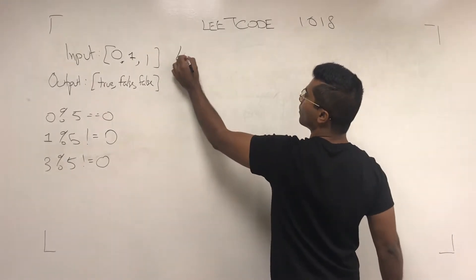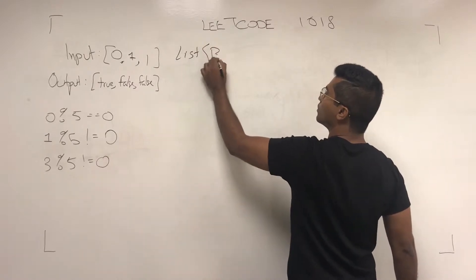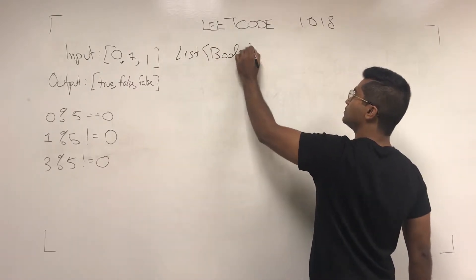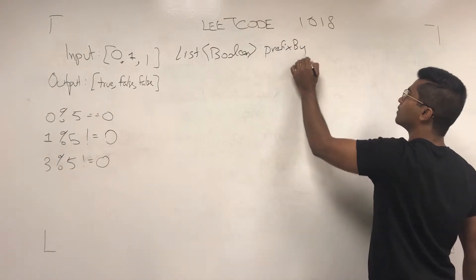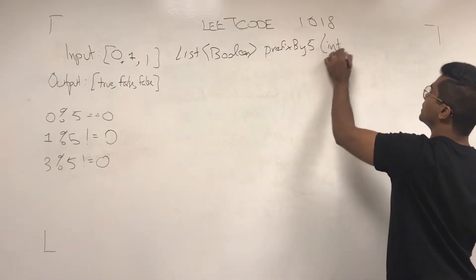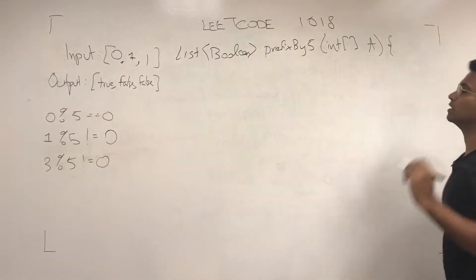So first, let's see what they want. List boolean prefixDiv5, and they give us an integer array. I think it's just called A.